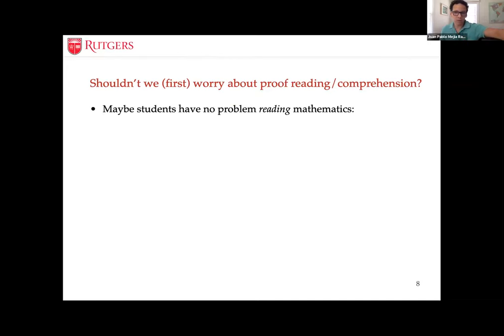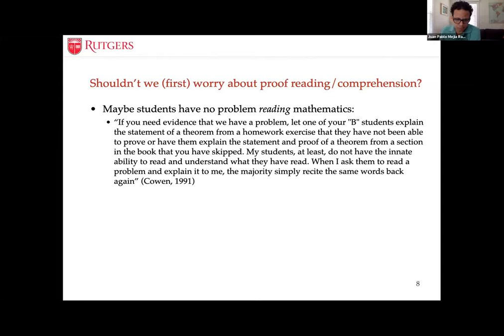Until recently there was not much research on proof reading activities. One might wonder whether students simply have no problems reading mathematics — but that is not the case. Carl Cohen, a mathematician writing in the American Mathematical Monthly in 1991, argued we need to pay attention to reading mathematics. He said: if you need evidence of a problem, let students explain the statement of a theorem from homework they couldn't prove. His students simply recited the same words back again.